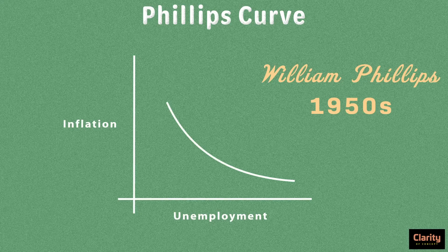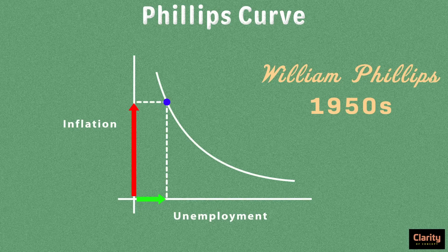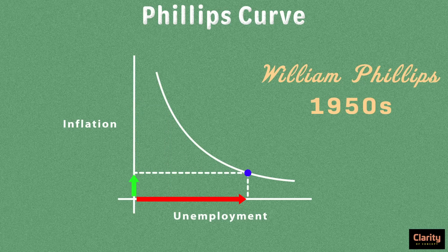The curve looks like this. When inflation was high, unemployment was low. And when inflation was low, unemployment was high. It appeared that by controlling one of these, the other can be controlled.